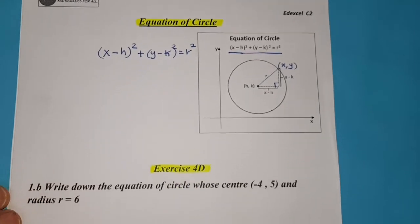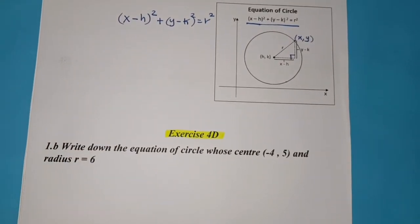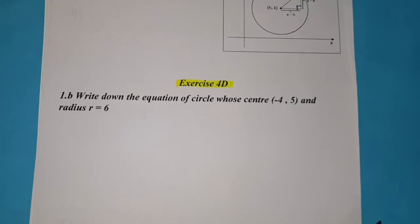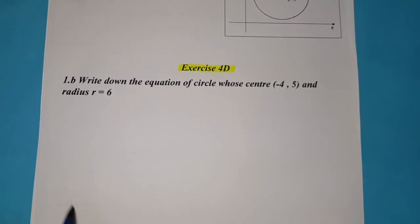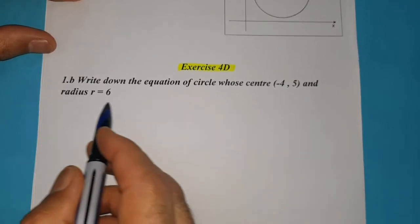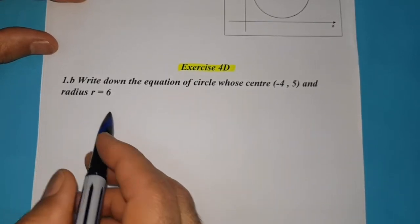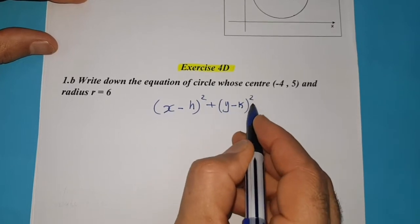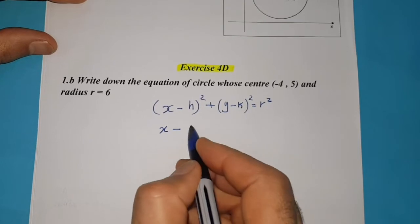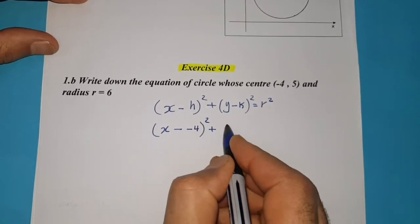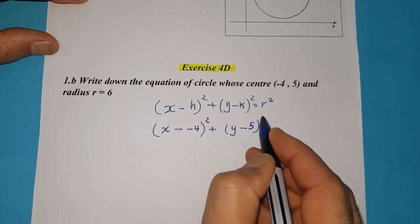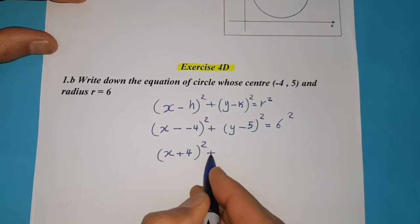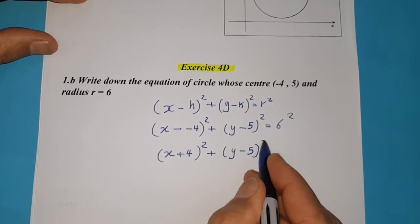I have some exercises here to apply this formula in Exercise 4D. Number one: write down the equation of a circle whose center is (negative 4, 5) and radius r equals 6. Using the formula (x minus h) squared plus (y minus k) squared equals r squared, we substitute: (x minus negative 4) squared plus (y minus 5) squared equals 6 squared. Simplifying: (x plus 4) squared plus (y minus 5) squared equals 36.